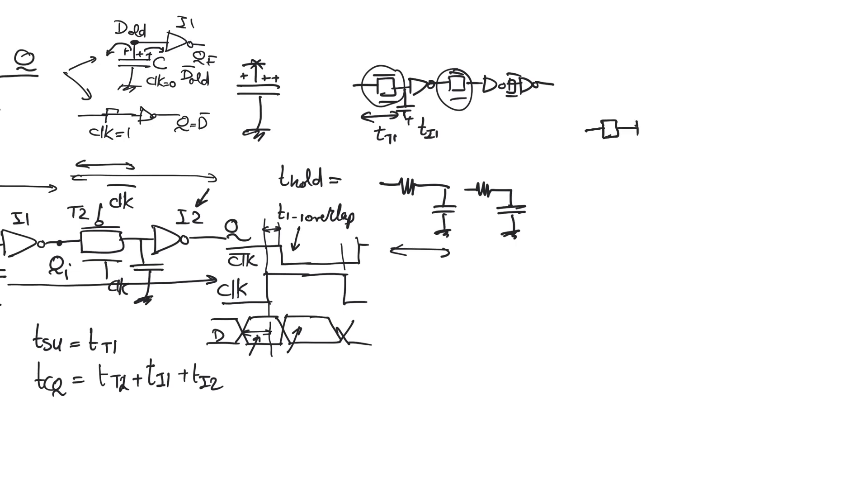If we only have transmission gates in series without intervening inverters then what we would be dealing with is the resistance of all of these transmission gates in series but there's also a capacitance at each of these nodes from the drains of the transmission gates and so we would be dealing with an RC ladder of this form. The delay of an RC ladder grows quadratically with the number of sections and so if we use inverters the delay of a bunch of latches connected back to back grows linearly with the number of latches. If we do not use the inverters the delay grows quadratically with the number of latches and that's devastating, that's not acceptable.